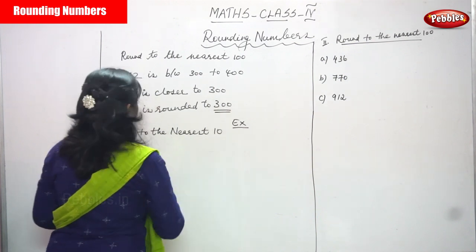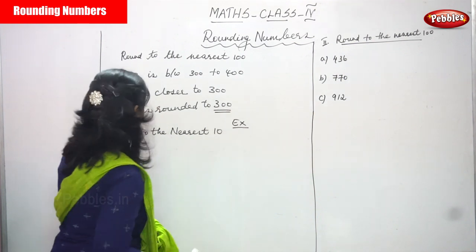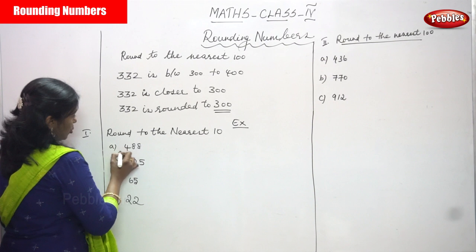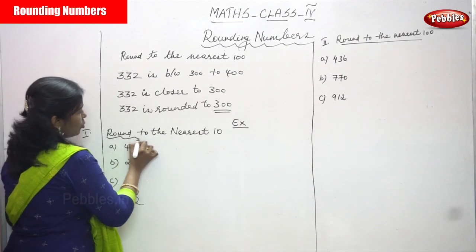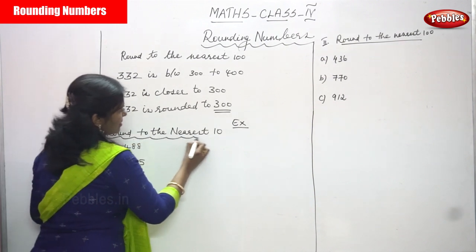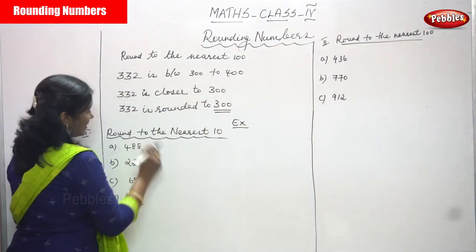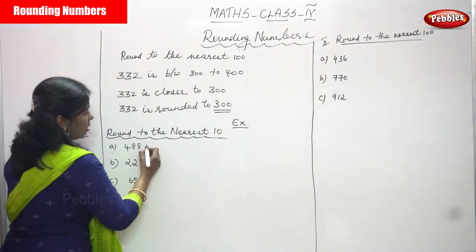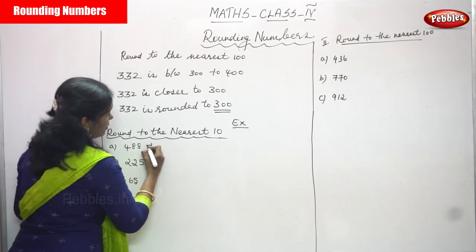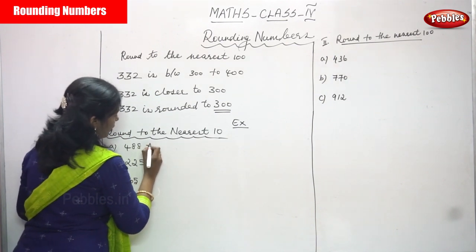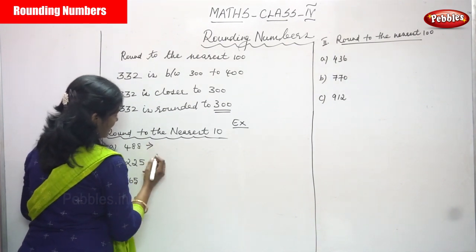Next, we are going to the exercise. Now you can understand the sum in a better way. Round to the nearest 10 — look at this number, 488.